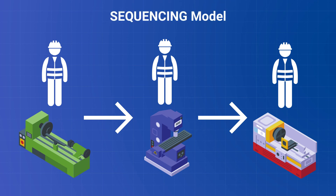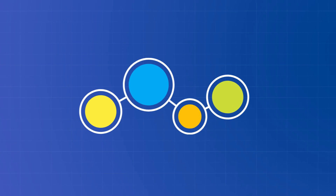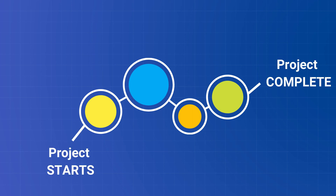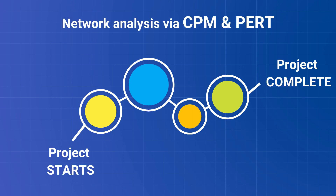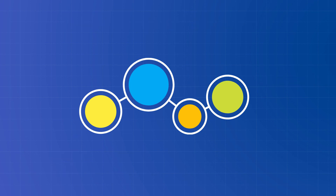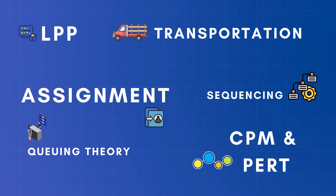Or if you want to find the best order for the flow of jobs between n number of machines, the sequencing model will be very helpful. But in my personal opinion, the most significant benefit of operations research comes into light when we use it for network analysis via CPM and PERT techniques. These two methods help in determining project completion time and ways to optimize it.